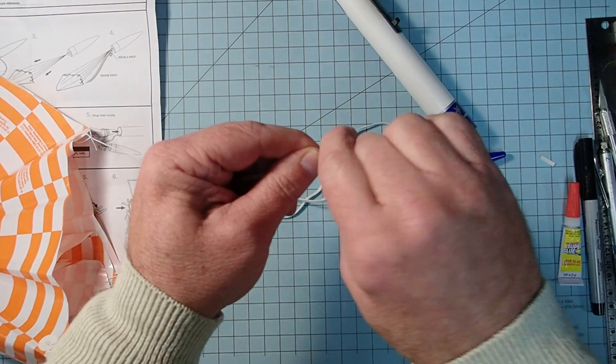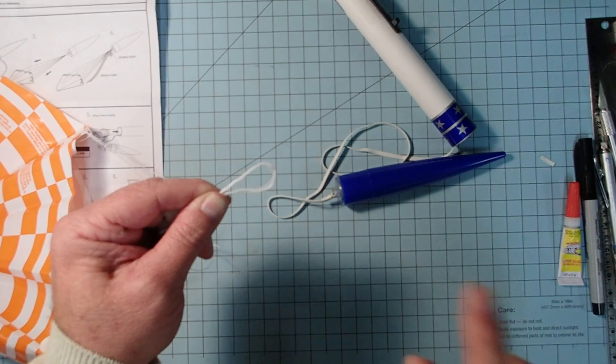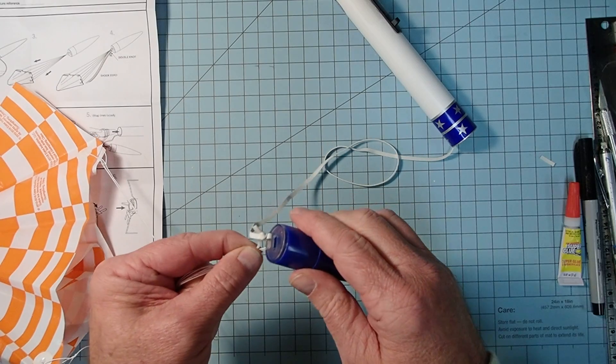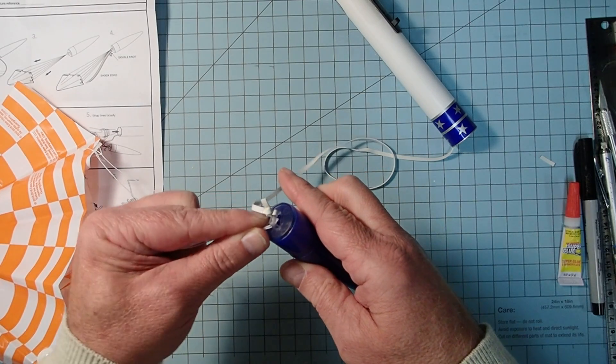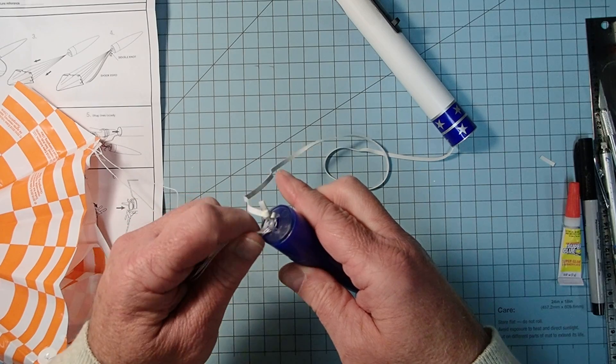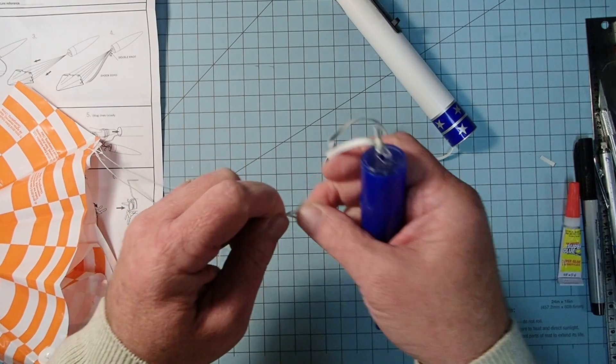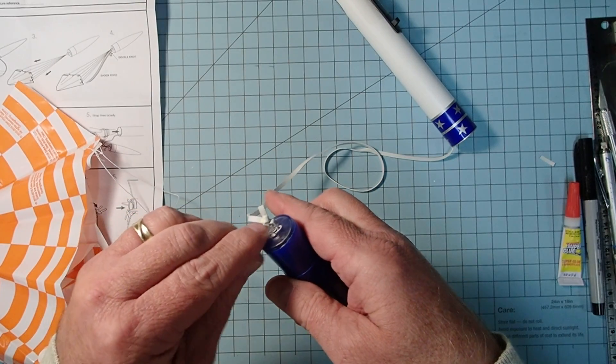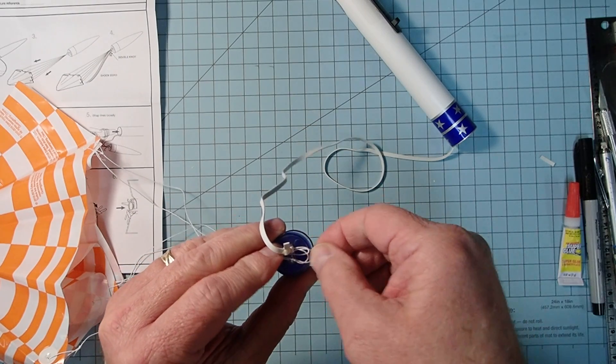All right, and you're going to hold on to these loops. And I'm going to show you two ways that you can mount this. The one is what they show in the instructions. So you take your loops and pass them through the eyelet, but not down into the nose cone.